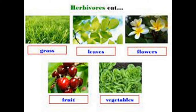Let's see the different types of things that Herbivores like to eat. They eat grasses, they eat leaves, they eat flowers, they like to eat fruits and they also like to eat vegetables. So these are the basic foods for a Herbivore.